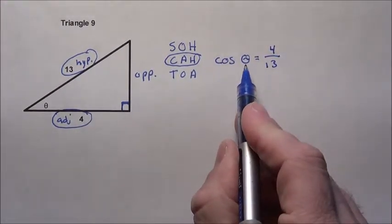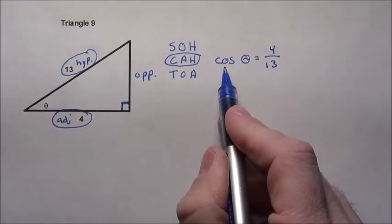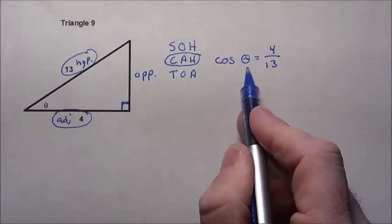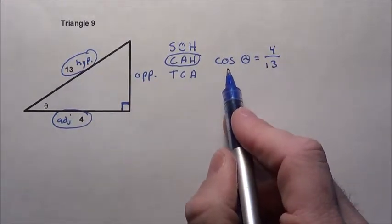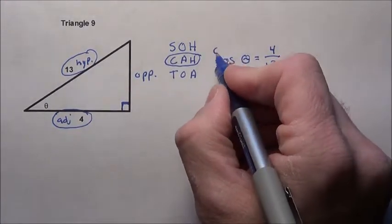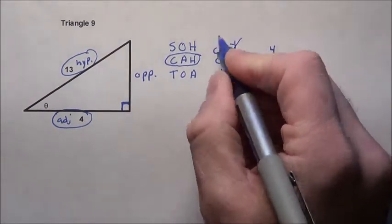So we've got to find theta here. I'm trying to find theta. I've got to get rid of the word cosine. Cosine of what degree? I could type in a bunch of numbers and come close and figure it out. But here's what I'm going to do. I'm going to take the inverse cosine. The inverse cosine of cosine goes away.